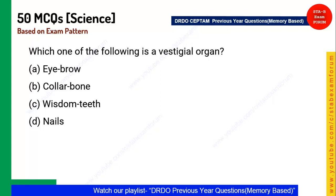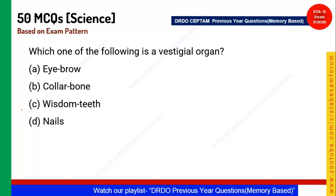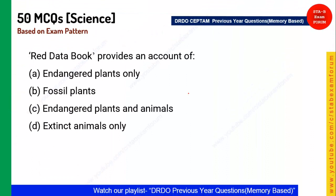Next question: Which of the following is a vestigial organ? A simple one — as you have studied, wisdom teeth is a vestigial organ, and the appendix is also a vestigial organ.